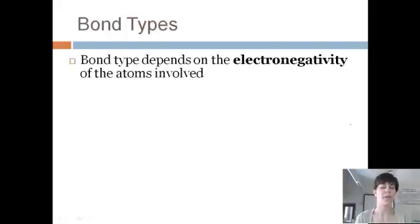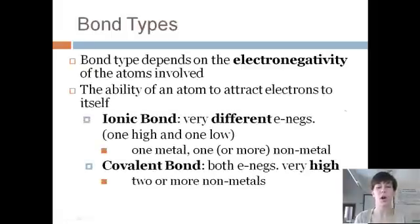All right, so just to review that there are two basic types of bonds, and it depends on what the electronegativity of the atoms are that are participating in these bonds. So remember that electronegativity is the ability of an atom to attract electrons to itself. In an ionic bond, you have one atom that has a very high electronegativity. It really wants to attract an electron, and you have one that has very low electronegativity. It doesn't want to attract an electron. In fact, it wants to get rid of an electron, so that's ionic. And with covalent, you have two or more atoms with very high electronegativity. They're both pretty good at attracting electrons to themselves.